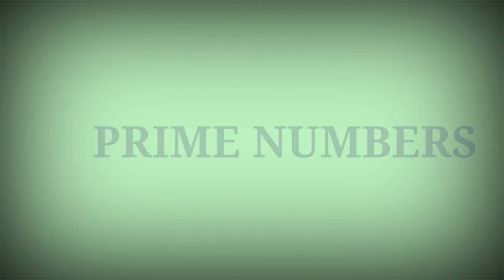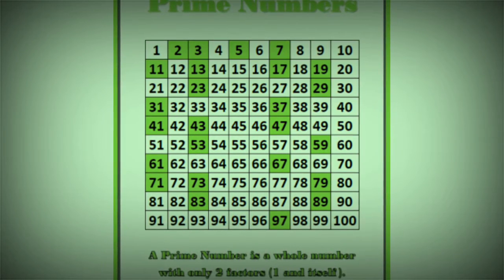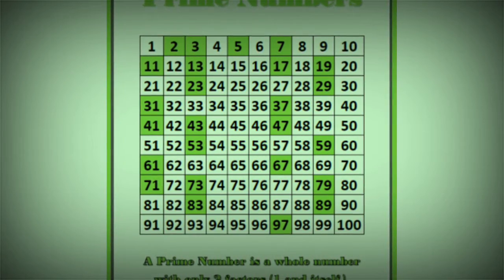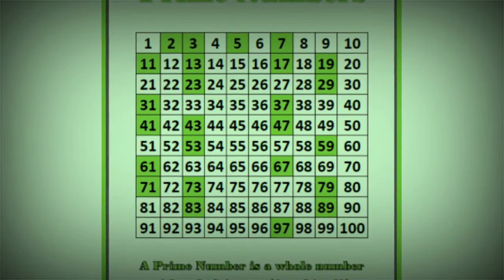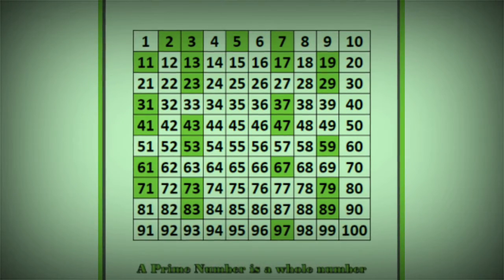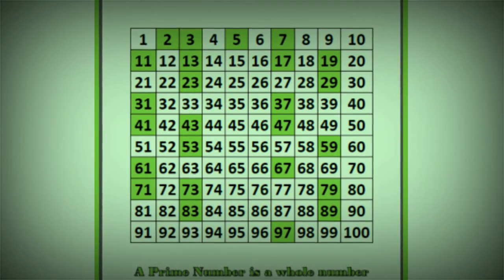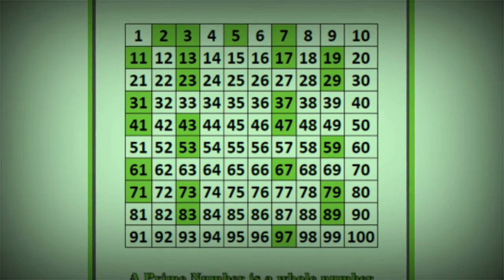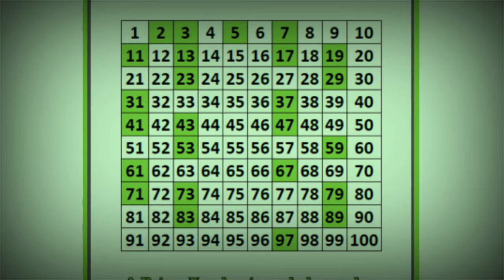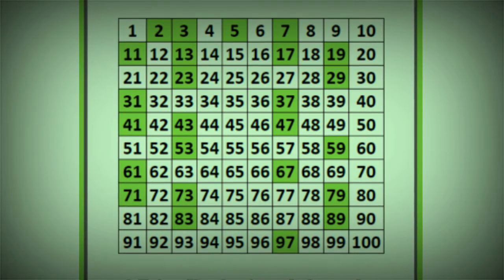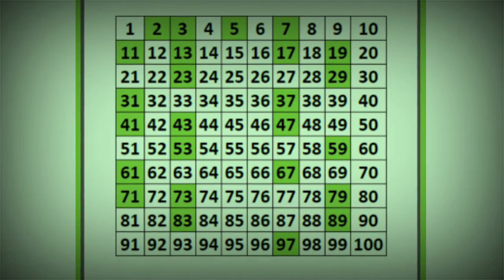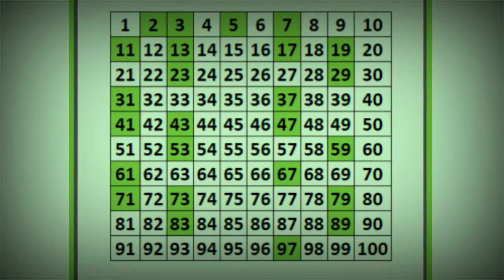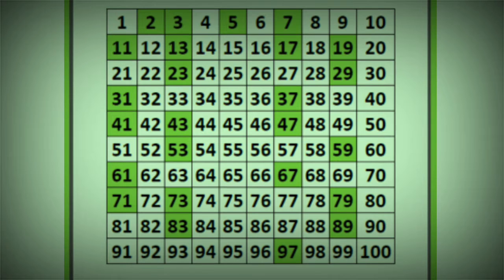What are prime numbers? A prime number is a whole number with only two factors: 1 and the number itself. Some examples are 2, 3, 5, 7, 11, 13, etc. For example, the factors of 2 are 1 and 2, and the factors of 3 are 1 and 3. Such numbers are called prime numbers.